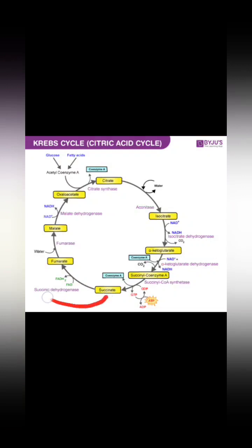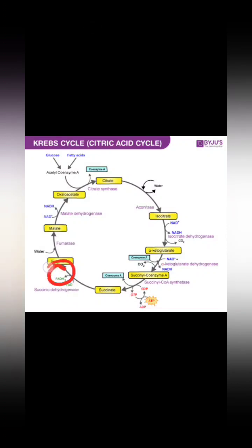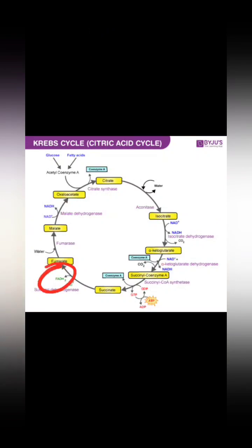Succinate is converted into fumarate in the presence of the enzyme succinate dehydrogenase. In this step, FAD is converted into FADH₂. So at this point in the cycle we have 2 NADH produced and 1 FADH₂ produced.